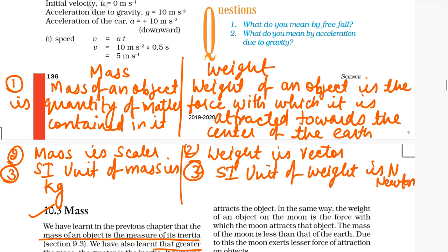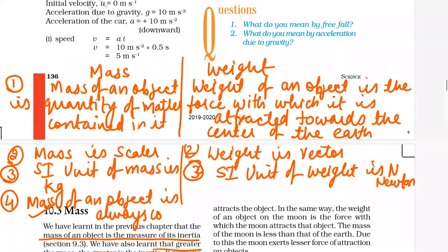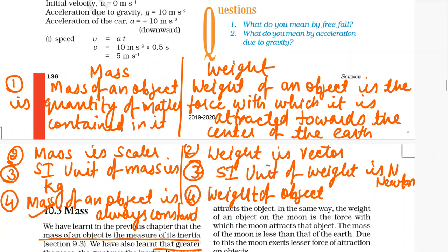Mass of an object is always constant. Weight of an object varies from place to place due to change in the value of G. Weight of an object varies due to variation in G.